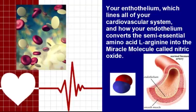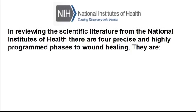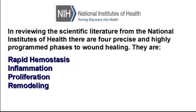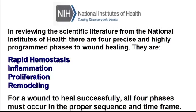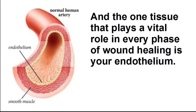Each plays a critical role in the wound healing process. In reviewing the scientific literature from the National Institutes of Health, there are four precise and highly programmed phases to wound healing: rapid hemostasis, inflammation, proliferation, and remodeling. For a wound to heal successfully, all four phases must occur in the proper sequence and time frame. The one tissue that plays a vital role in every phase of wound healing is your endothelium.